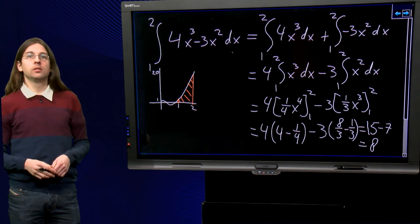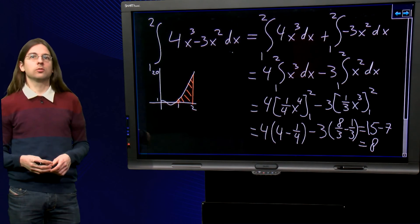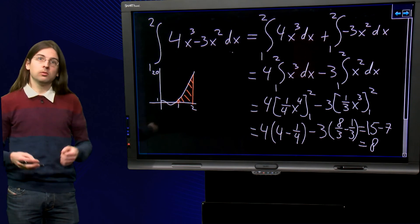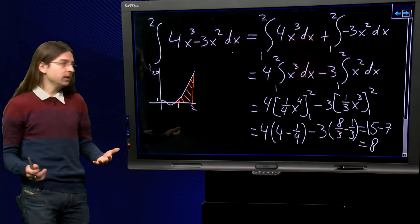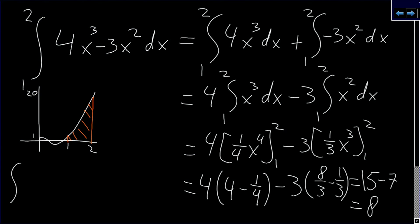These rules of calculation also work for indefinite integrals. For example, we could write directly: the integral of 4x cubed minus 3x squared dx equals x to the 4th minus x cubed plus c.